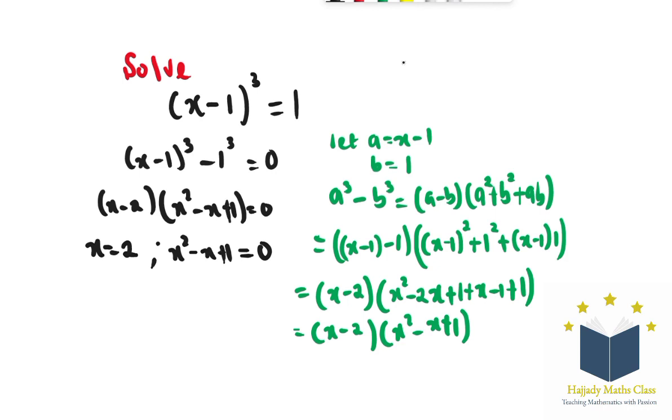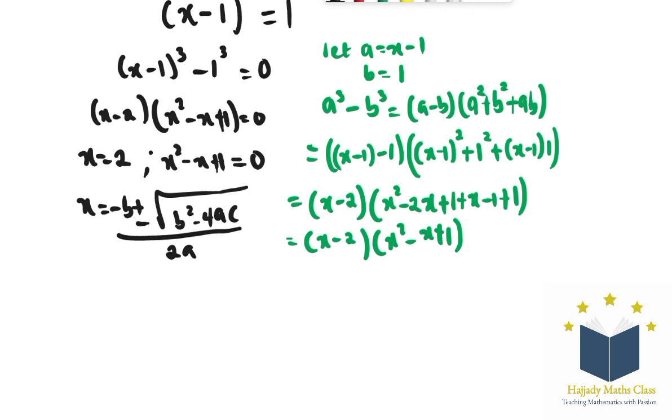Now using quadratic formula approach, I'm going to have x equals minus b plus or minus root b squared minus 4ac over 2a. So plugging in the value of the coefficients, I'm going to have minus negative 1 plus or minus root negative 1 squared minus 4 times 1 times 1 over 2 times 1.